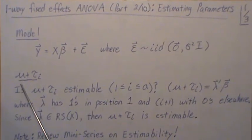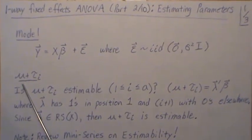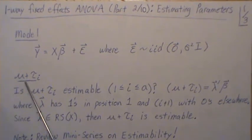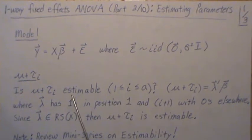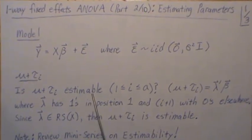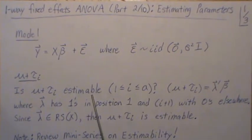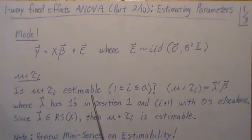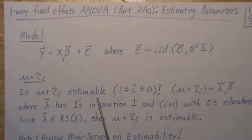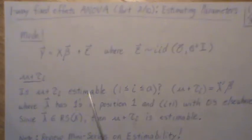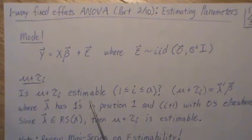For instance, if we want to estimate the ith treatment effect, so it'd be μ + τᵢ, is it estimable? Is there a unique estimate every time we do it? We can always estimate it with silly estimators or something that is not unique. But the goal, is there a unique estimator, meaning is it estimable?